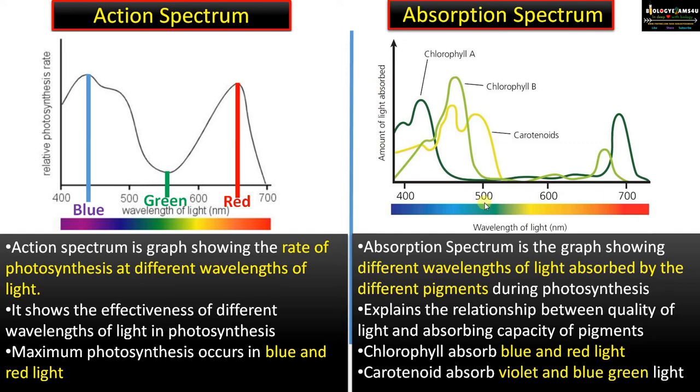For chlorophyll A and B, you can see prominent peaks in the blue region and red region, indicating that chlorophyll absorbs blue and red light.